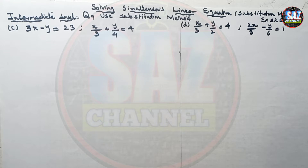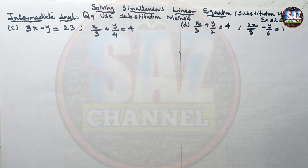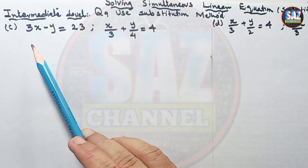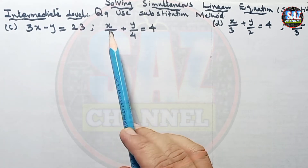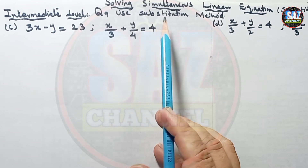Hello and welcome to Maths by SAS. This is my 16th lesson of D2, Chapter 2, Exercise 2E, about solving simultaneous linear equations using the substitution method. In this lesson I'll solve intermediate level question number 9. The first equation is 3x minus y equals 23, and the second equation is x/3 plus y/4 equals 4.